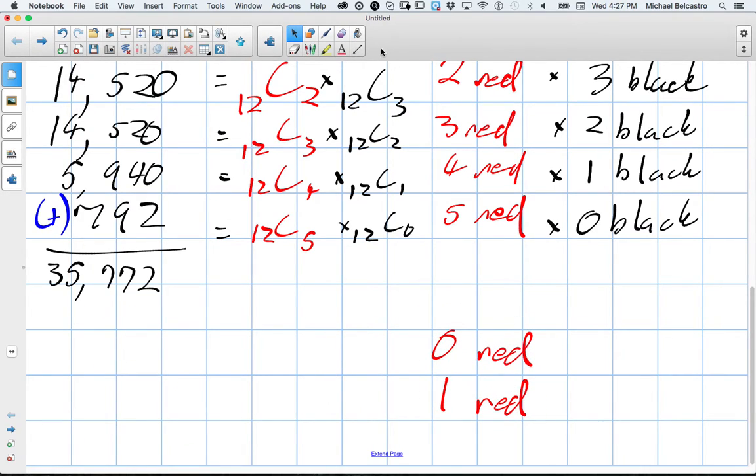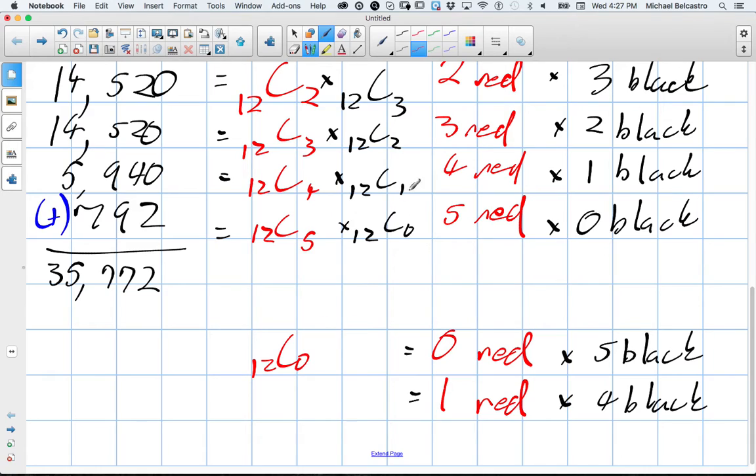Zero red and one red, which would have left with five black and four black cards. Zero red cards is asking how many ways can we choose zero from 12, then multiply it by how many ways can we choose five out of 12. And we already have these numbers. And then 12 choose one multiplied by 12 choose four. This one, 12 choose zero times 12 choose five is 792. 12 choose one times 12 choose four is 5,940.